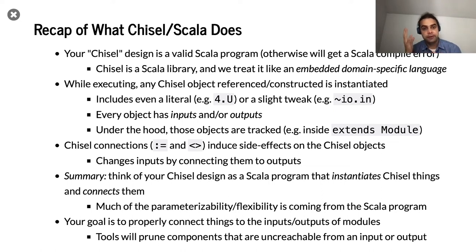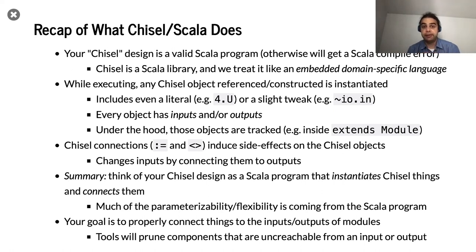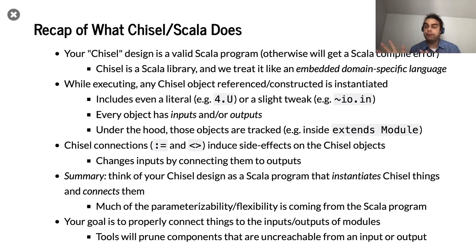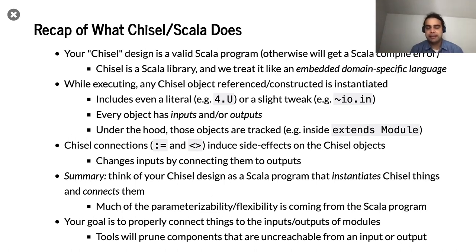We've created a bunch of objects and connected them together in the Chisel world. Another way to think of this whole process: you are making a Scala program that instantiates Chisel things and connects them. You're instantiating things and connecting things — those are the two core operations. All the sweet parameterized, flexible generators come from Scala. But in terms of core Chisel operations, it's instantiation and connections.